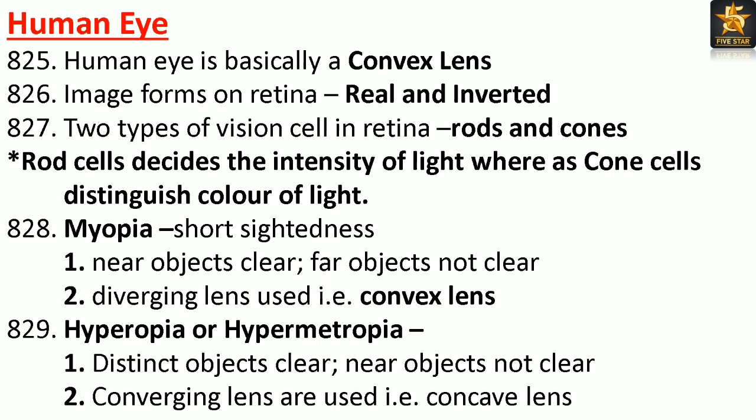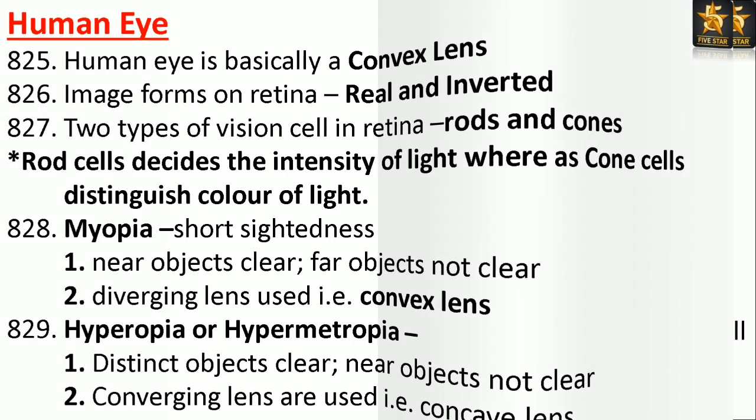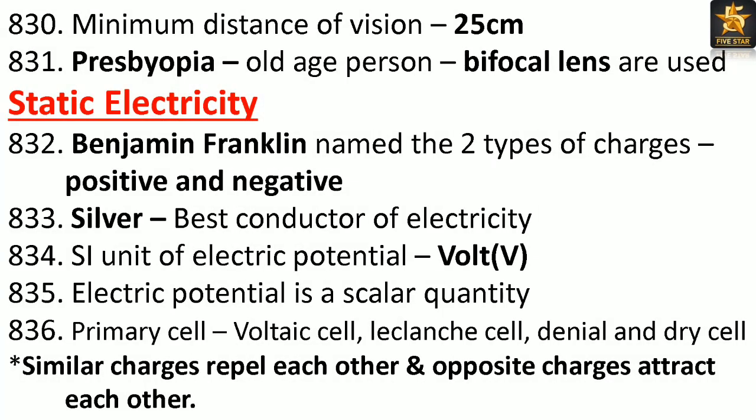Hyperopia or hypermetropia: distant objects are clear but near objects are not. Corrected using a converging (convex) lens. Minimum distance of vision: 25 cm. Presbyopia: a condition of old age persons for which bifocal lenses are used.